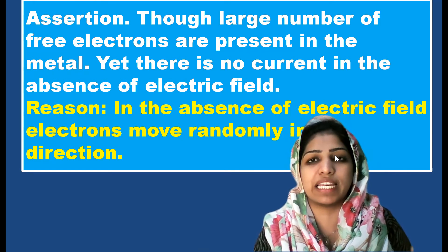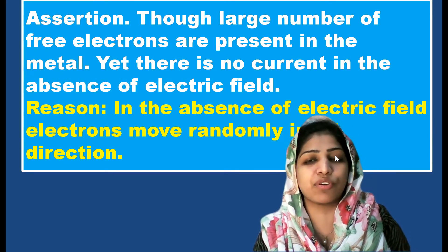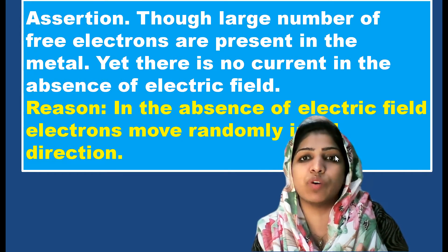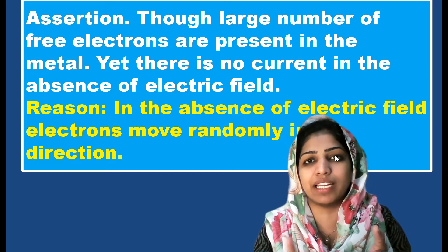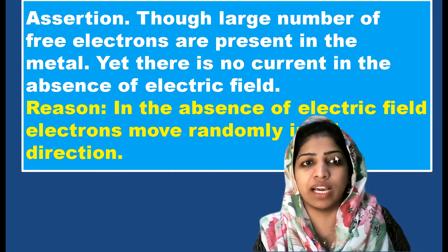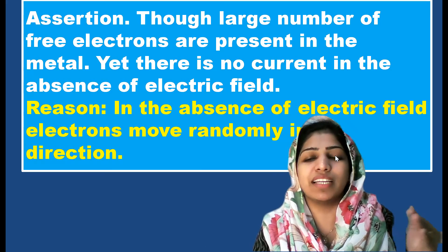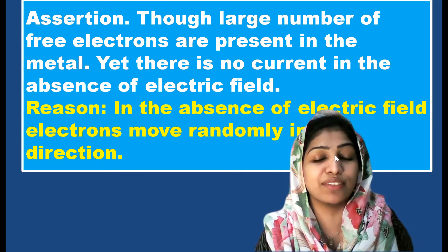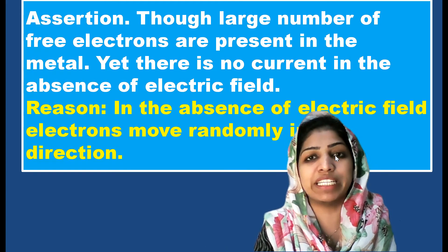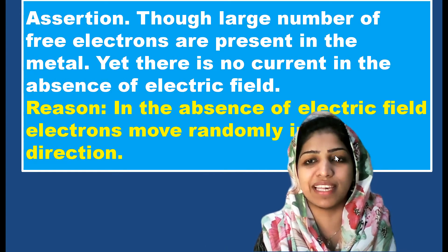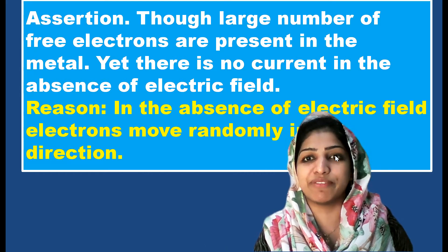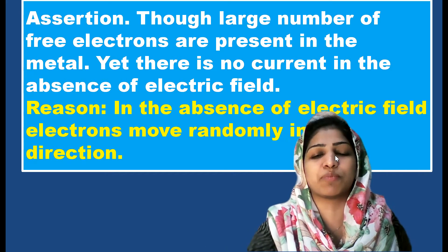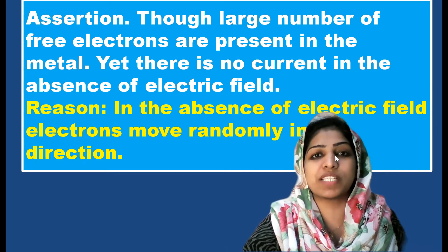When we connect a battery, electrons start moving away from the negative terminal and towards the positive terminal. This gives a net drift velocity. The assertion — that there is no current in the absence of an electric field — is true. The reason correctly explains the assertion, so the answer is option A.